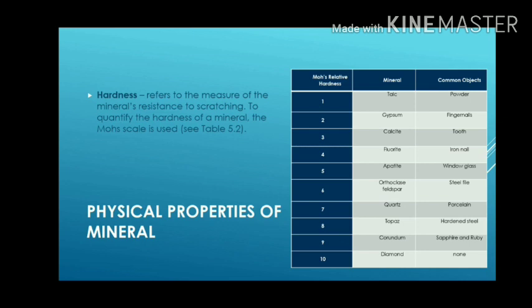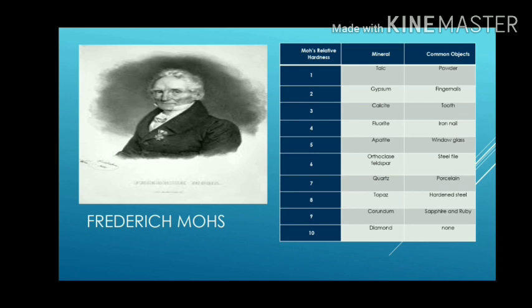Hardness is the ability of a mineral to resist scratching. The Mohs scale of mineral hardness is based on the ability of one mineral to scratch another mineral visibly. This Mohs hardness scale was developed in 1800 by Friedrich Mohs, a German mineralogist who selected 10 minerals of different hardness ranging from very soft talc to very hard diamond. Mohs hardness is a measure of relative hardness and resistance to scratching — as you move up the scale, hardness increases from 1 up to diamond at 10.